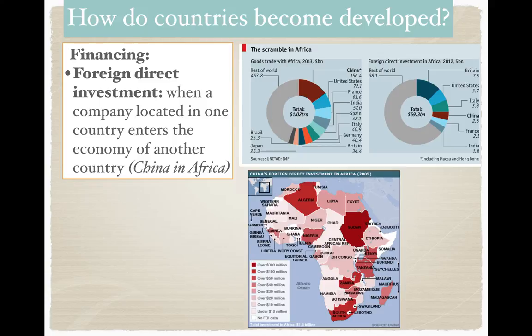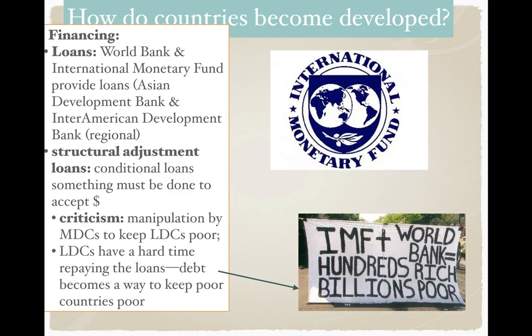You can see the rest of foreign direct investment in Africa in 2012, where China has a decent portion. By 2013, there's just an enormous amount of Chinese presence and Chinese businesses in Africa. Another way to get financing is not through businesses, but through loans — that's the purpose of the World Bank and the International Monetary Fund, also known as the IMF.